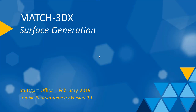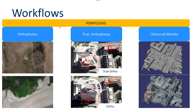For typical products we normally have the autophoto generation, the true autophotos, and the textured meshes. The autophoto production is a very classic standard production line where typically you have a digital terrain model, then aerial images that will be singly geo-referenced. If I have 100 aerial images, I will get 100 autophotos.